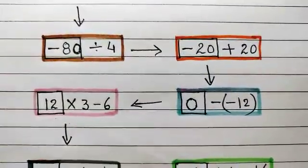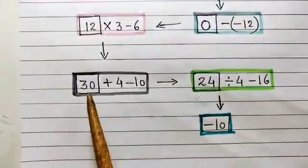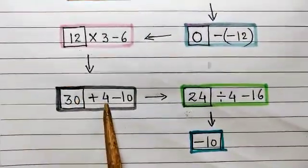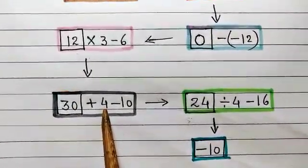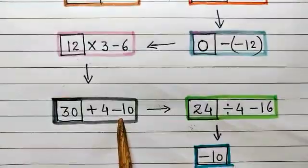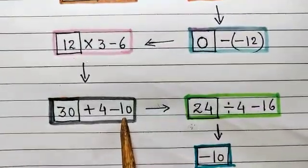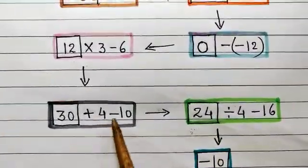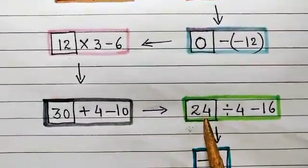Here, you have to use the BODMAS rule. This 30, when added to 4, is giving you 34. And when 10 is subtracted, it is giving you 24. So, 34 minus 10 is 24.